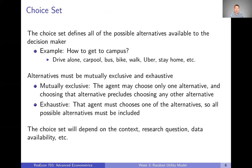The first thing we need to do is define the choice set — all the possible alternatives available to the decision maker. For example, if we're looking at how someone gets to campus, the choice set could include: drive alone, carpool, take the bus, bike, walk, take an Uber or ride-share, or maybe stay at home. We could probably come up with a dozen other ways someone could get from home to campus. The choice set must define all possible alternatives the decision maker is choosing over, and a couple of things we need to keep in mind.